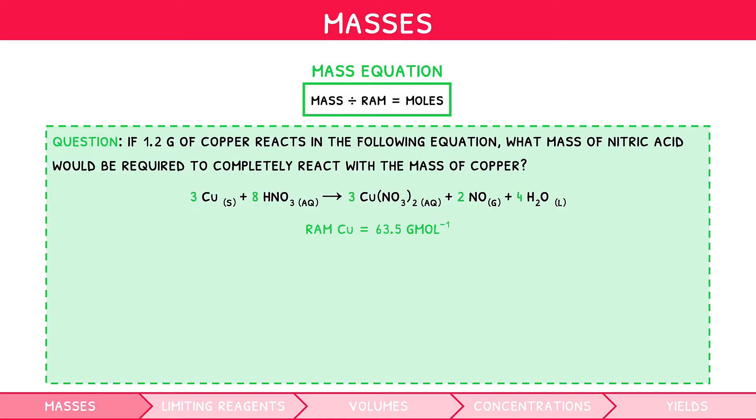We can calculate the number of moles of copper as mass divided by RAM. Then, by dividing this number by 3 and multiplying by 8, we get the number of moles of nitric acid. Then we can calculate the mass of nitric acid as moles times RAM, which is 3.17 grams.